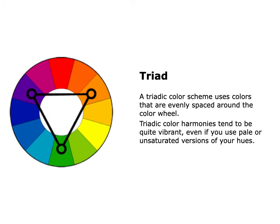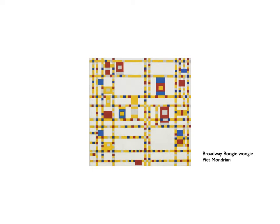The next color scheme is triadic. A triadic color scheme uses colors that are evenly spaced around the color wheel — for example, the primary colors are evenly spaced three spaces apart, so they're a good example of a triadic color scheme. The secondary colors and any set of tertiary colors would also be considered triadic. Triadic color harmonies tend to be vibrant, and even if you use pale or unsaturated versions, they're considered balanced. Here's an example of Piet Mondrian's Broadway Boogie-Woogie with a triadic color scheme.